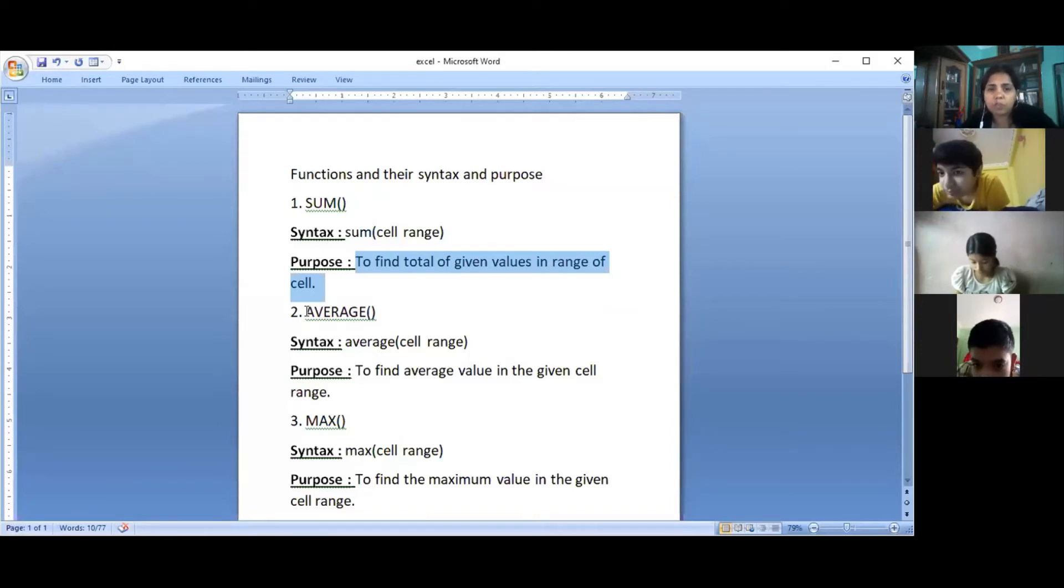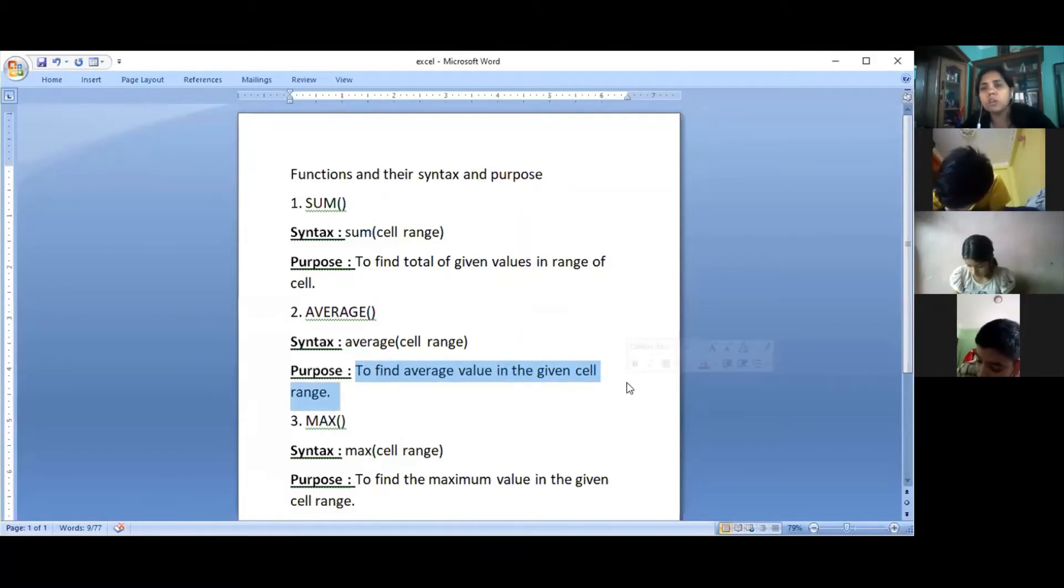The next one is AVERAGE. This is the syntax: AVERAGE(cell range). Its purpose is to find the average value in the given cell range. If many values are given of the same kind or type, then the AVERAGE function helps us to find the average value from that group of values.